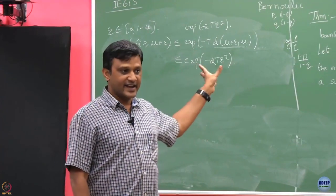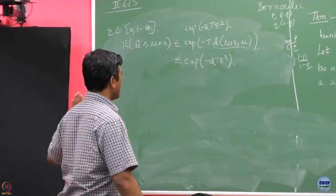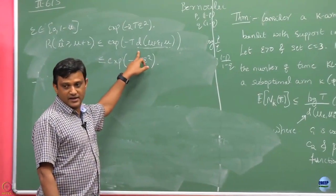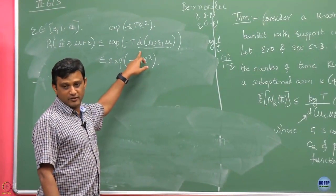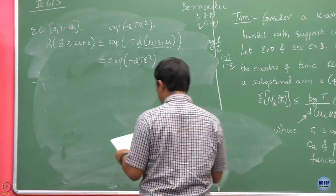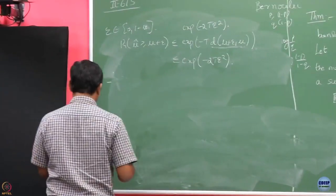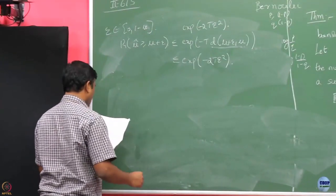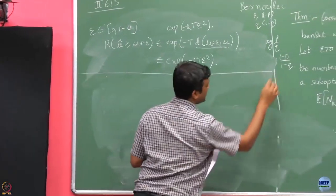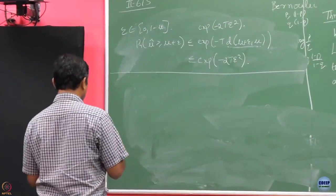KL-UCB exactly exploits this, and that is why it is able to express all its bounds in terms of the KL divergence, which happen to be tighter than the UCB bounds. So let us quickly go through the proof. This will be a good exercise repeating some steps from a previous class.